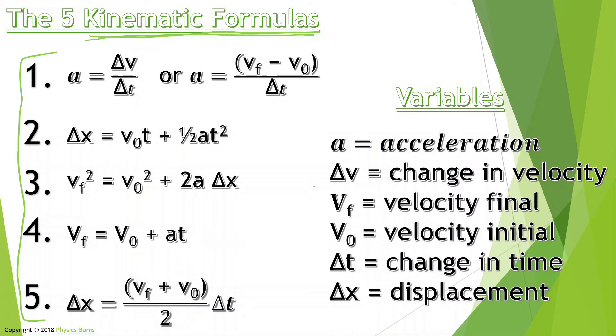Before we look at what these five formulas are, let's look at the variables. We have a symbolizing acceleration, delta v symbolizing change in velocity, v sub f symbolizing velocity final, v sub zero symbolizing velocity initial, delta t symbolizing change in time, and delta x change in position or displacement.